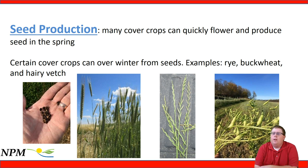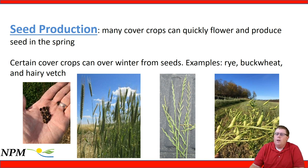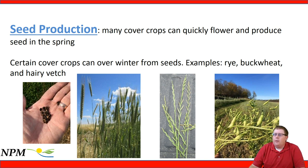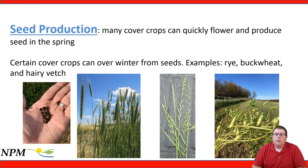Thinking more about seed production, cover crops can flower and produce seed quickly in the spring, and certain species can overwinter from those seeds — rye, buckwheat, and hairy vetch all overwinter and produce seed the next year. One photo shows buckwheat seed about 60 days after planting in a research trial at the Lancaster Agricultural Research Station. Another shows winter rye near mid-June starting to produce viable seed, while annual ryegrass produces viable seed near the end of May. Finally, radish — which we often don't see go to seed in Wisconsin — actually produced seed in that southern Wisconsin field and could become a weed in the next growing season.